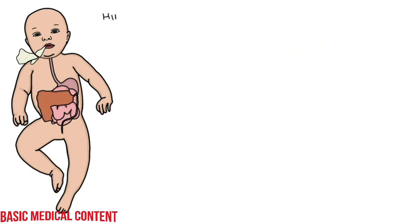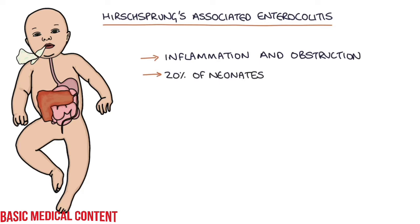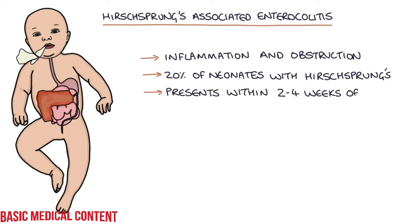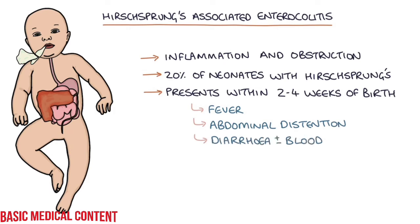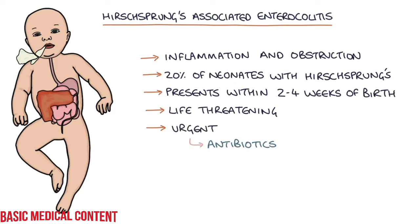There's a condition called Hirschsprung's-associated enterocolitis. It is inflammation and obstruction of the intestine occurring in around 20% of neonates with Hirschsprung's disease. It typically presents within 2–4 weeks of birth with fever, abdominal distension, diarrhea often with blood, and features of sepsis. It's life-threatening, can lead to toxic megacolon and perforation of the bowel, and requires urgent antibiotics, fluid resuscitation, and decompression of the obstructed bowel.